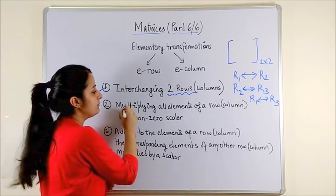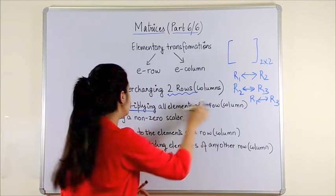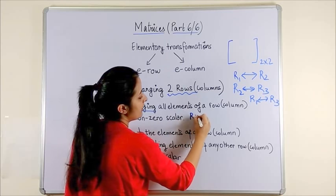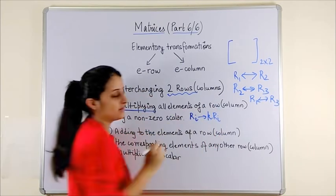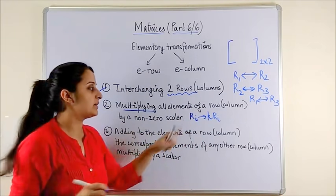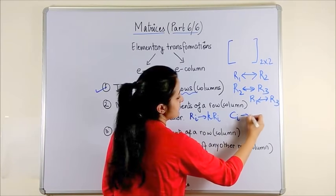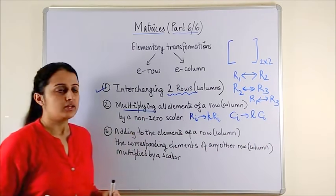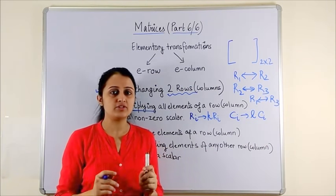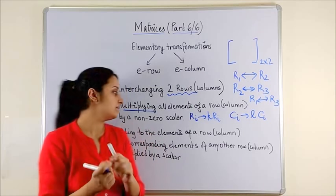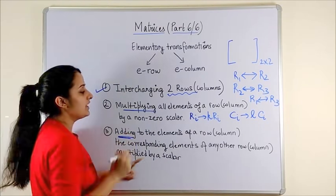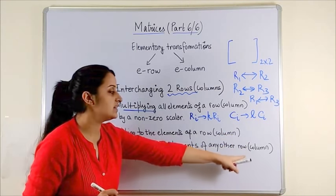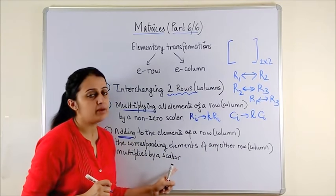Point number two is multiplying all elements of a row or a column by a non-zero scalar. That means we can apply Ri = K times Ri — scalar multiplication. Or column i equals some non-zero scalar L times column i. Point three is adding to the elements of a row or column the corresponding elements of any other row or column multiplied with a scalar.